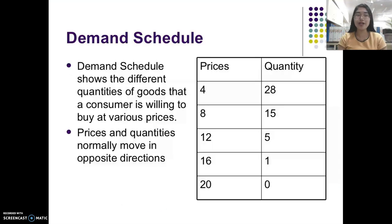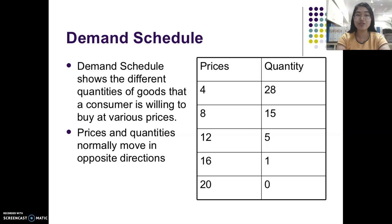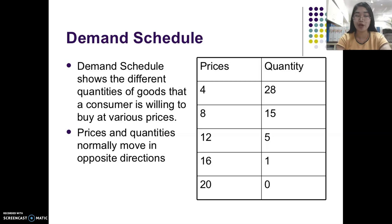When analyzing demand, we can use three types: the demand schedule, the demand curve, and the demand function. The demand schedule is a tabular form showing the relationship between prices and the quantity of a product. For instance, if the price of a product is 4 pesos, the tendency is to buy more — say 28 units — and if the price goes up, the tendency is to buy less.